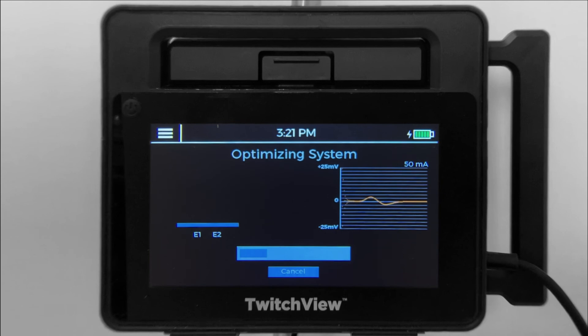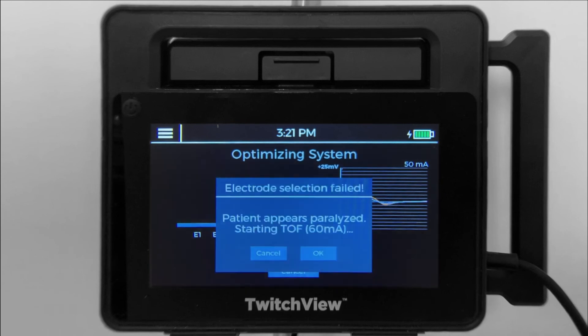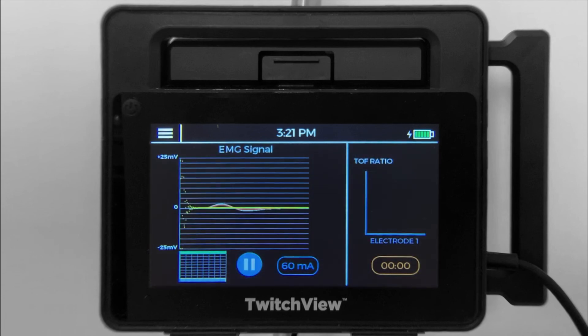If the patient is paralyzed prior to startup, the monitor will default to 60 mA and measure electrode 1. The measurements will be accurate, but you will not see the pre-paralytic blue bar.